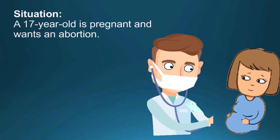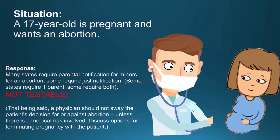Abortion. A 17-year-old is pregnant and wants an abortion. Can she have the abortion? Many states require parental consent for minors for an abortion; some require just notification, some require one parent, and some require both. This is quite a complicated topic, and the USMLE will not test us on this material because states differ on the matter.